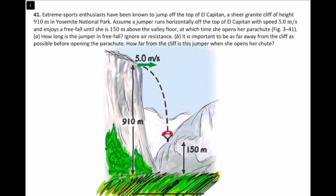This is chapter 3 problem 41. We take the ground to be zero level and make up positive. The velocity is horizontal, so it doesn't have any vertical component. Thus the vertical initial velocity is equal to zero.